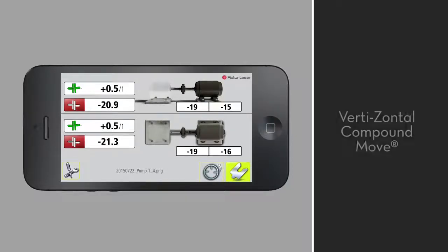The LaserKit app uses the vertizontal compound move. With this method, you loosen the bolts, then correct both the vertical and horizontal alignment before tightening and re-measuring. Using live readings to make the horizontal adjustment makes this possible.